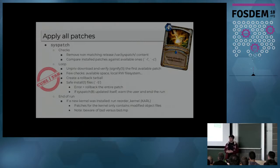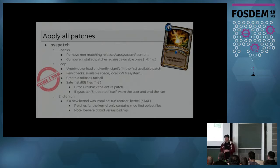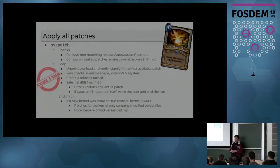We pick the actual list of files to install from the tar.gz, then create a rollback table using the actual files on the system. We save and install the files contained in our patch using install -S, which is the safe install that unlinks the existing target before installing a new file. At the end of the run, if a new kernel was installed — that is, if it was a kernel patch — then we run reorder_kernel.